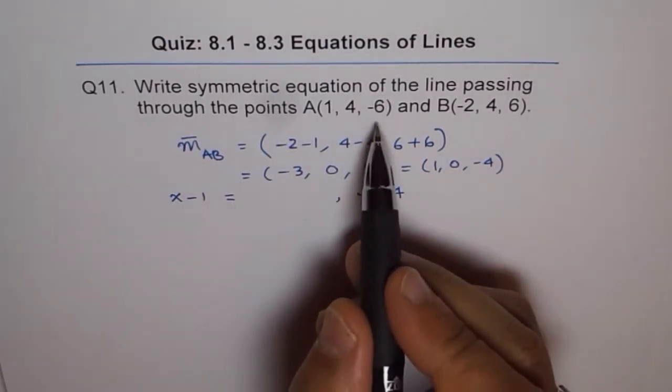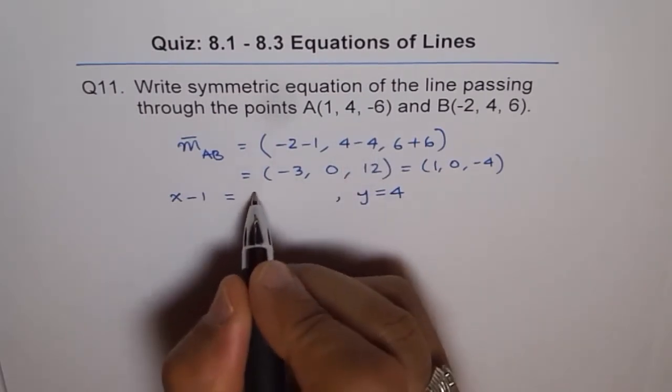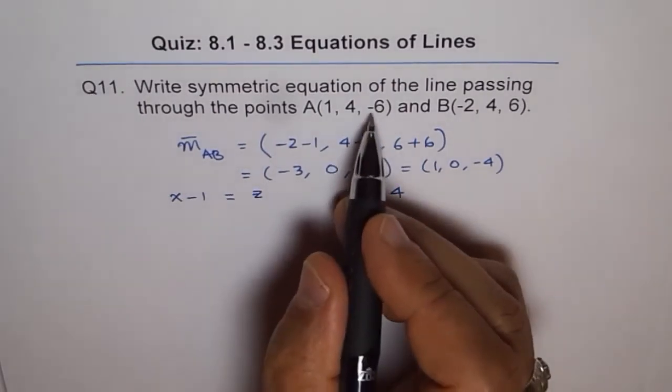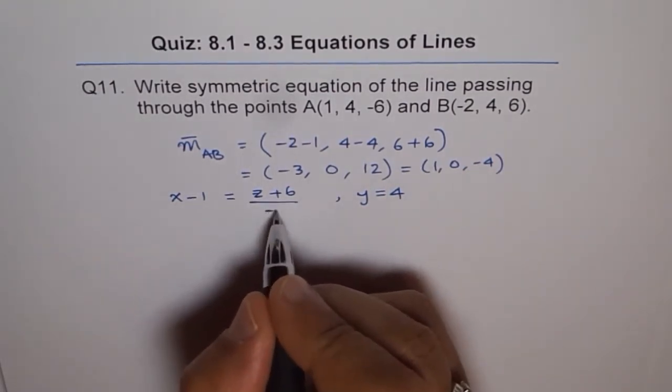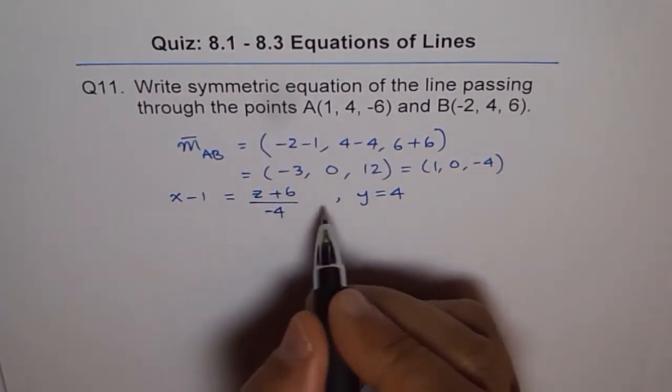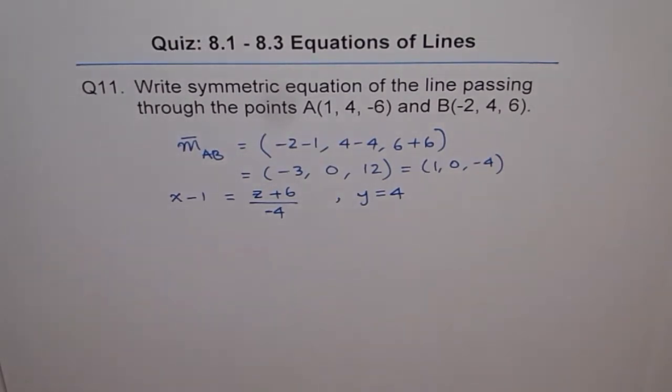And then, z is z minus -6, which is plus 6, divided by -4, like this. So, that is our symmetric equation.